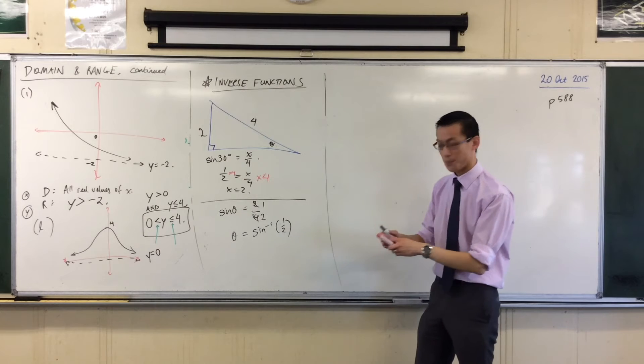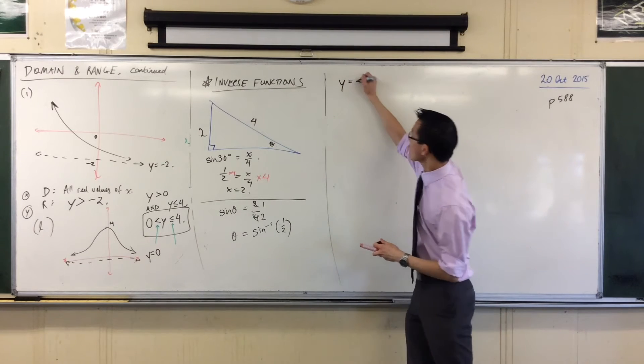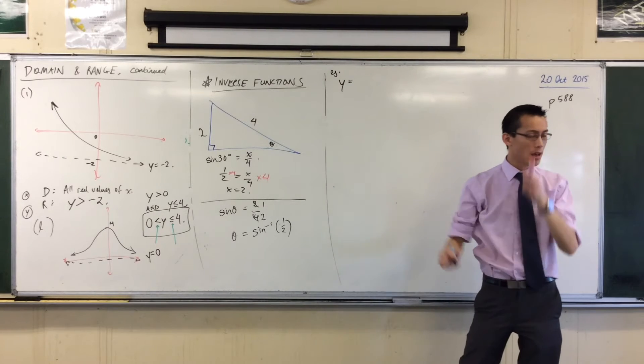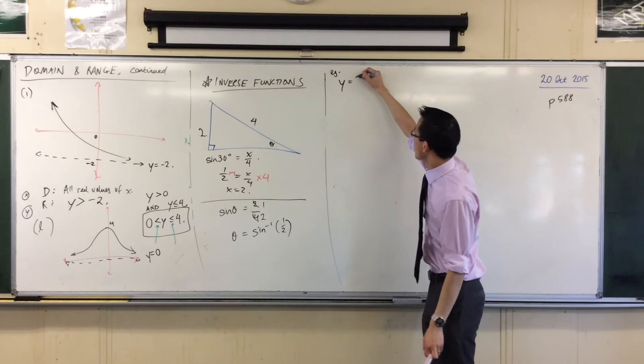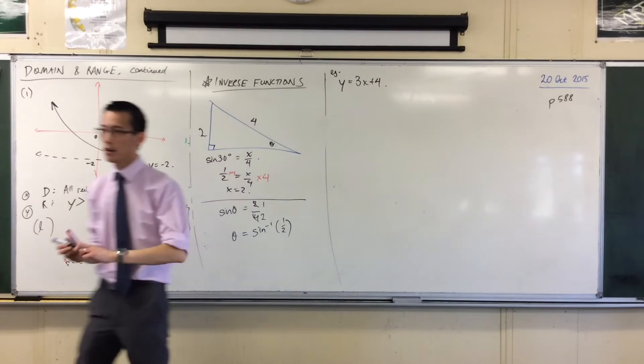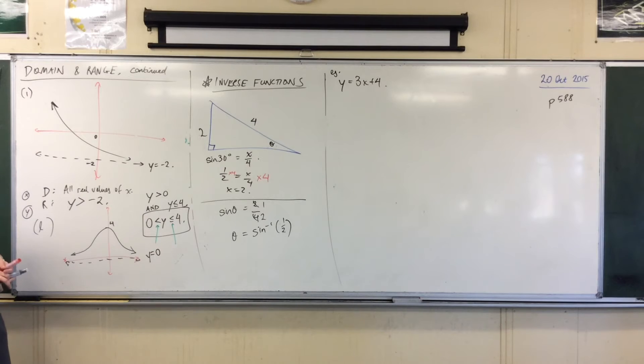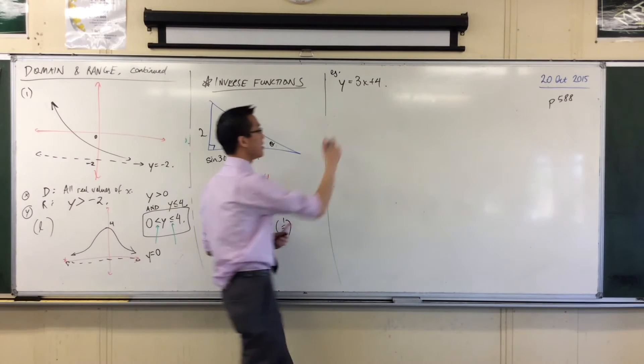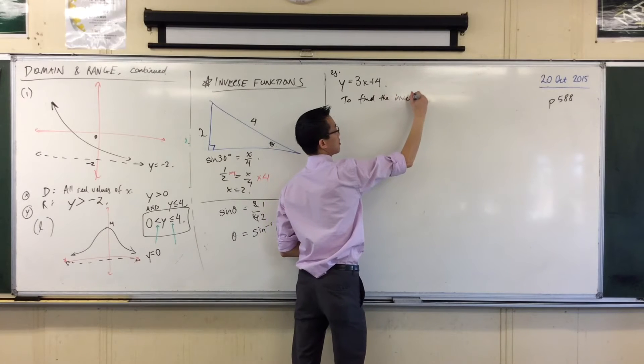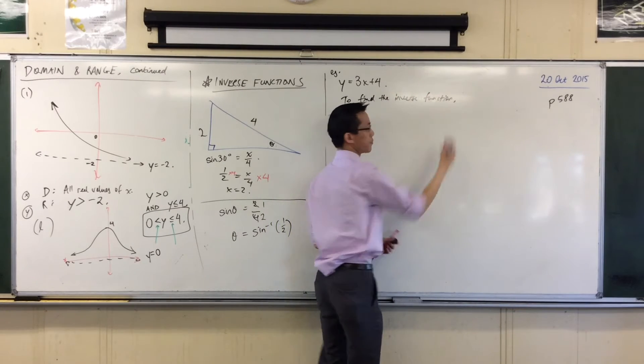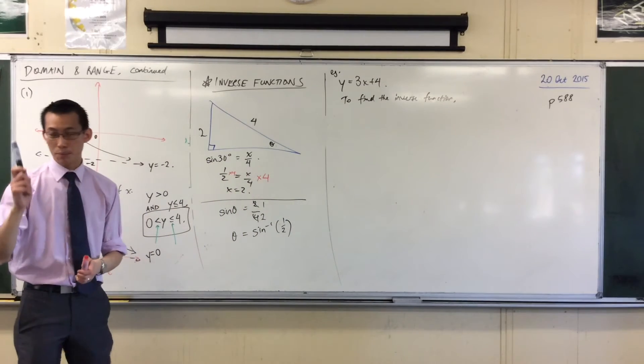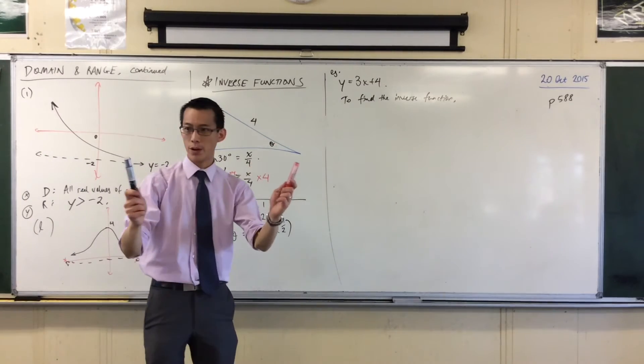So, here's what we're going to do as an example. Let's take a function. This is an example of a function. Let's take a nice, easy, straight line. Something like, we'll do plus 4, okay? Now, to undo this function, to find the inverse, in fact, I'll even write that.